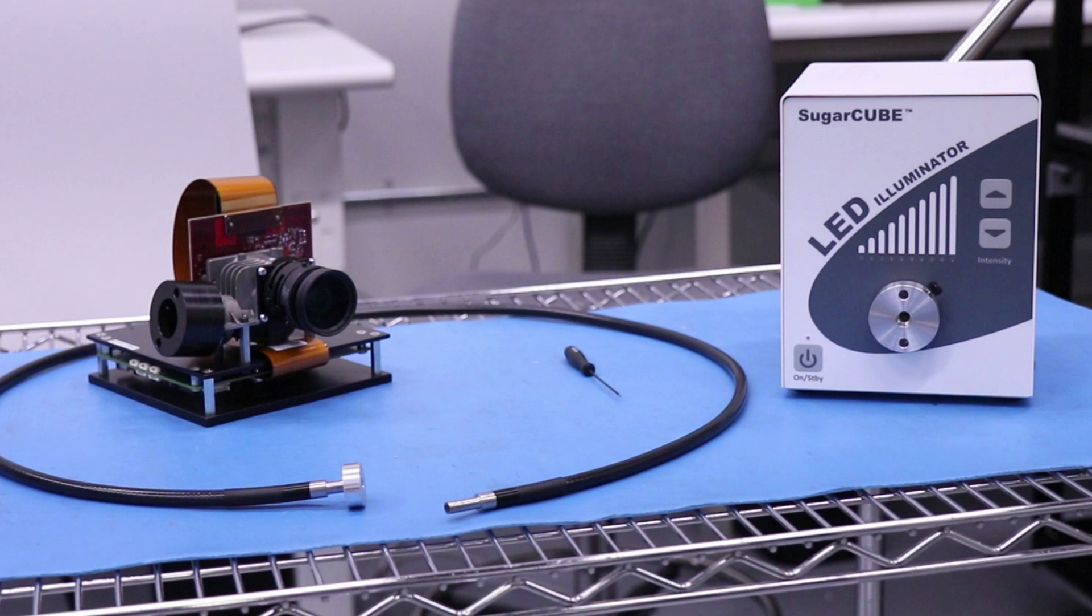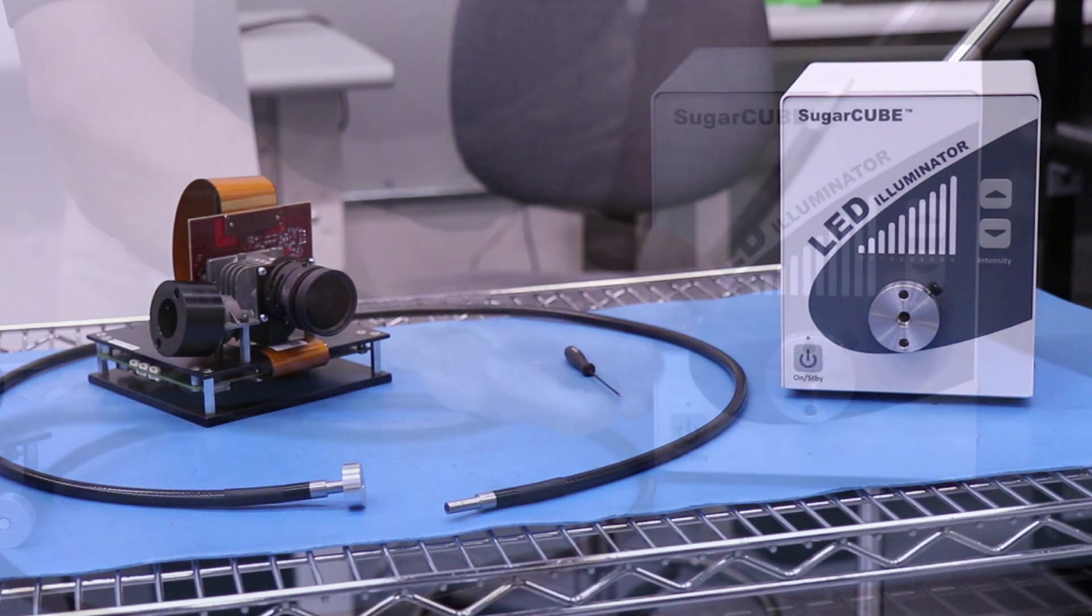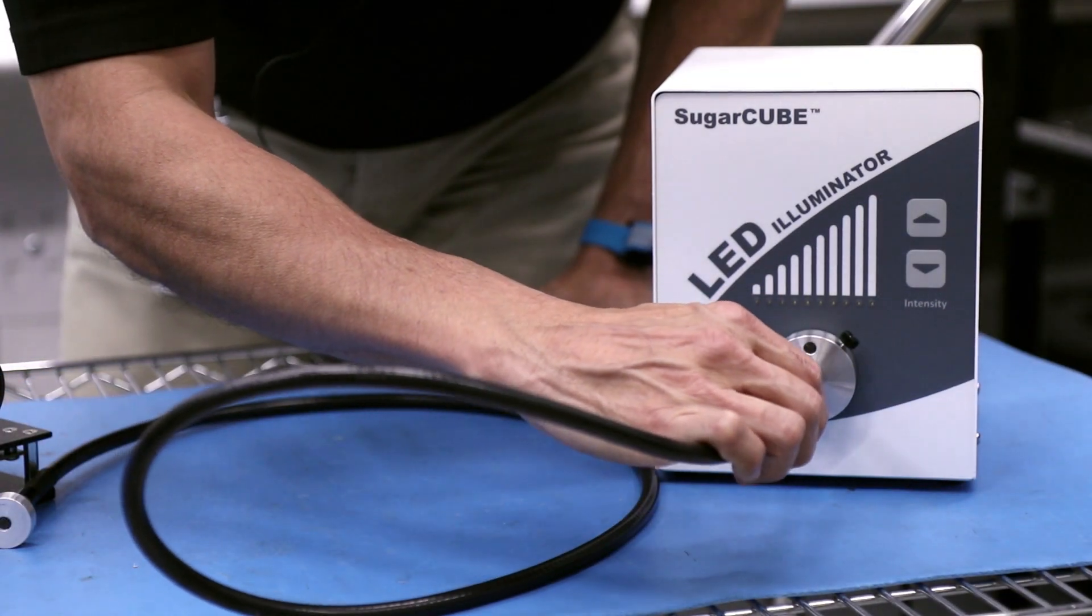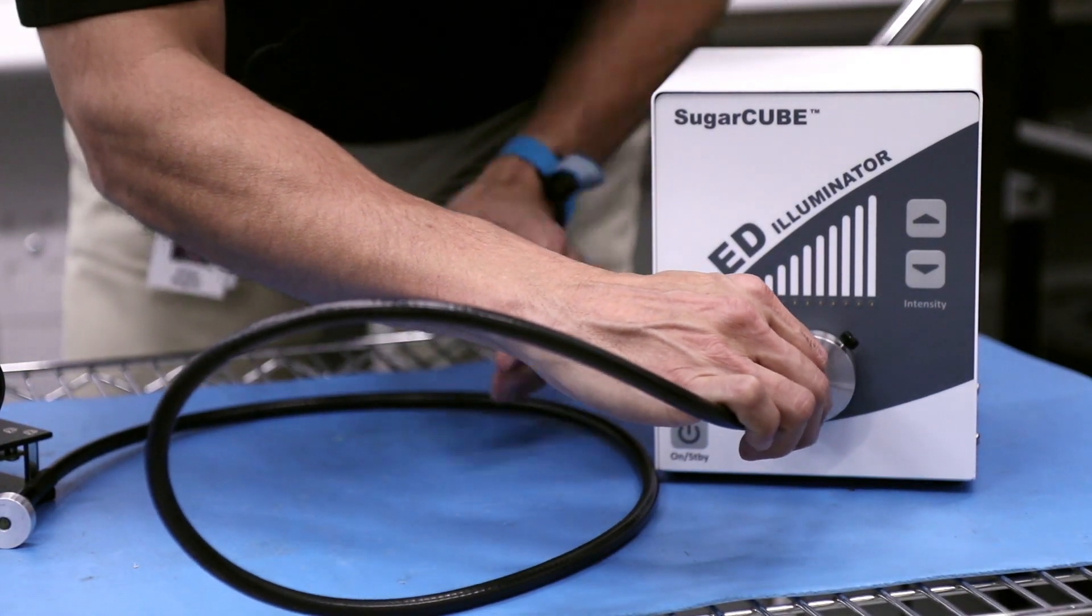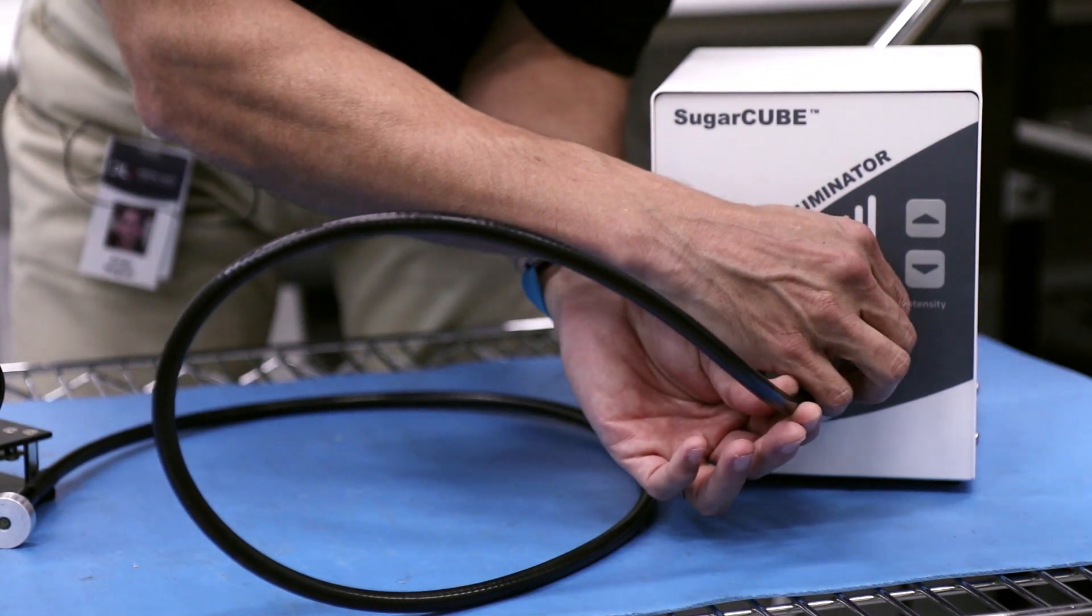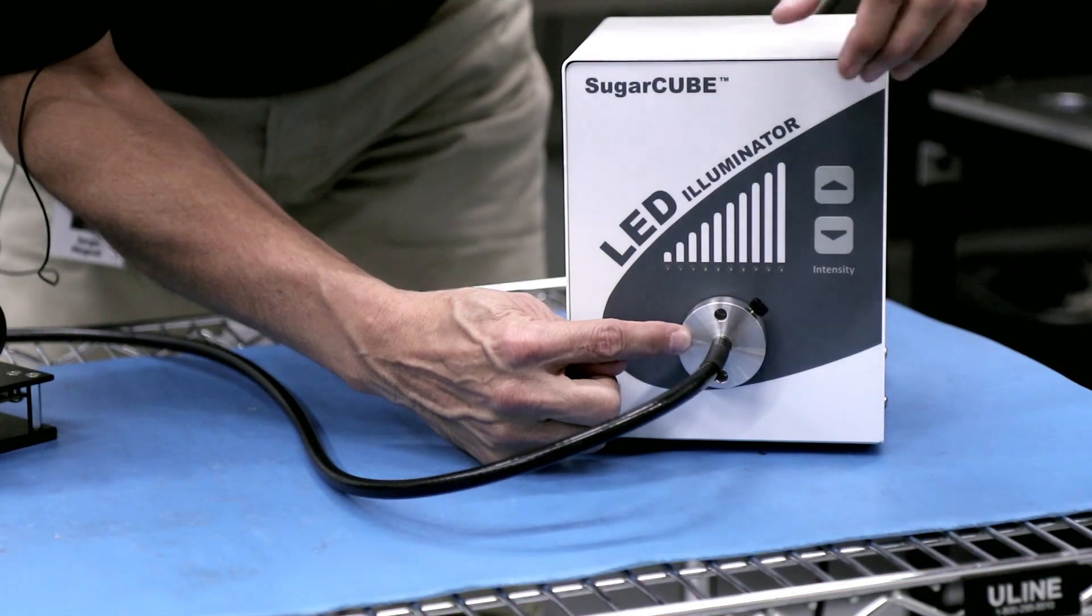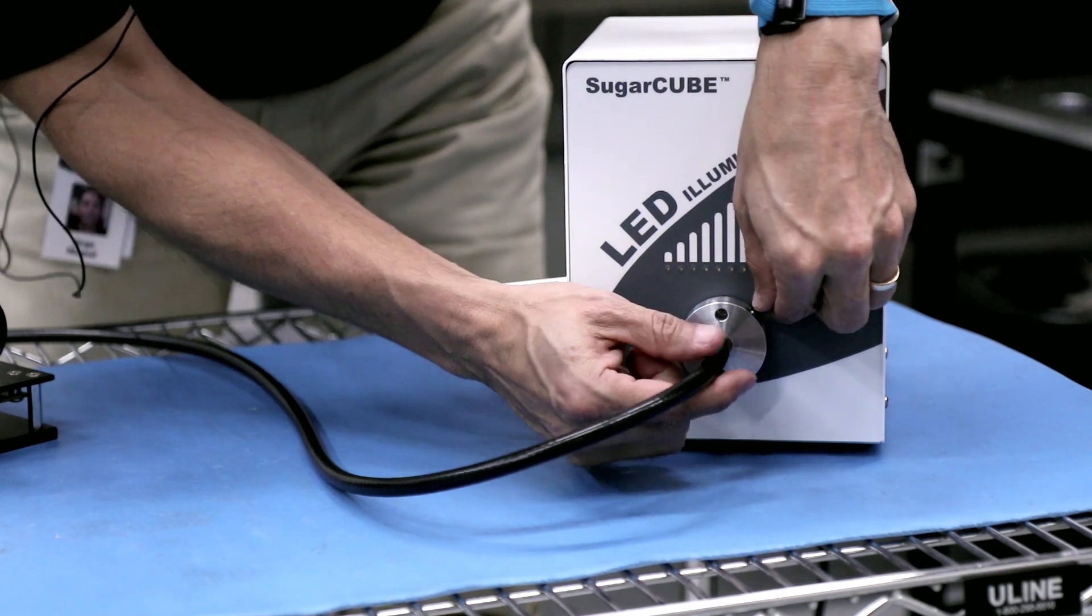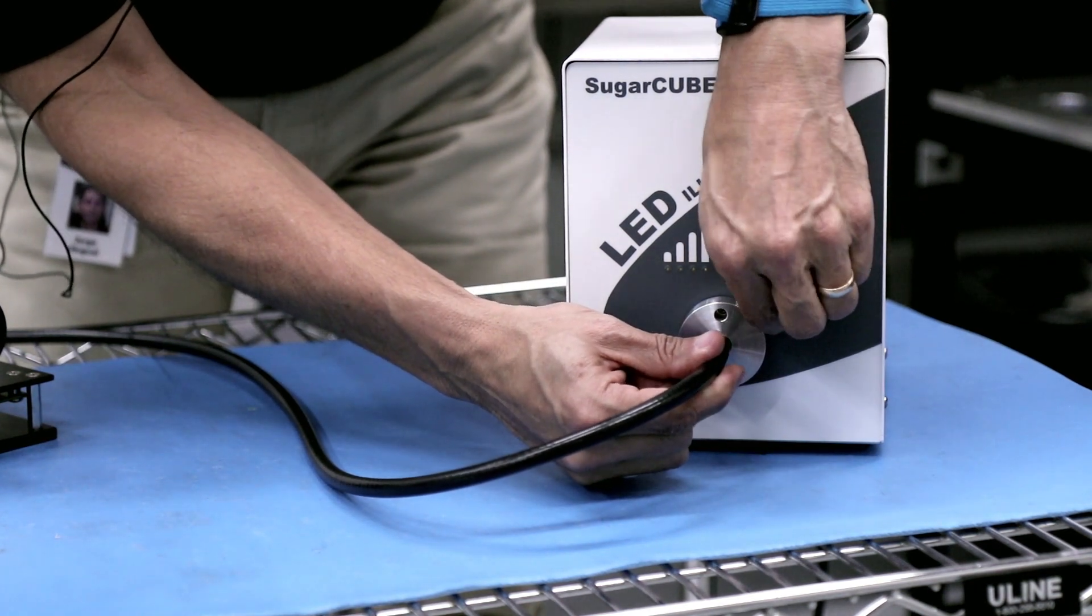Now that we have all the items together let's begin assembling your system. We'll begin with the Sugarcube. First locate your fiber optic cable. Take one end of the fiber optic cable and insert it into the Sugarcube adapter. Once in place tighten the set screw to hold the fiber optic cable.